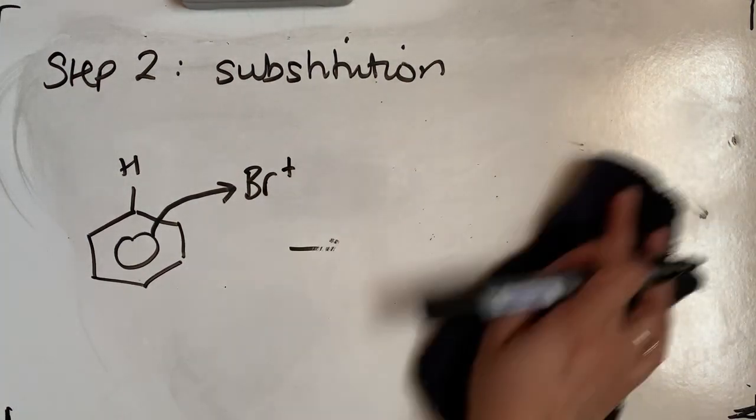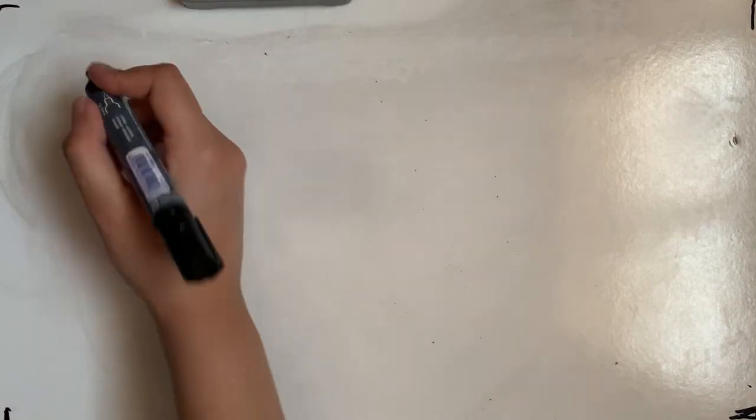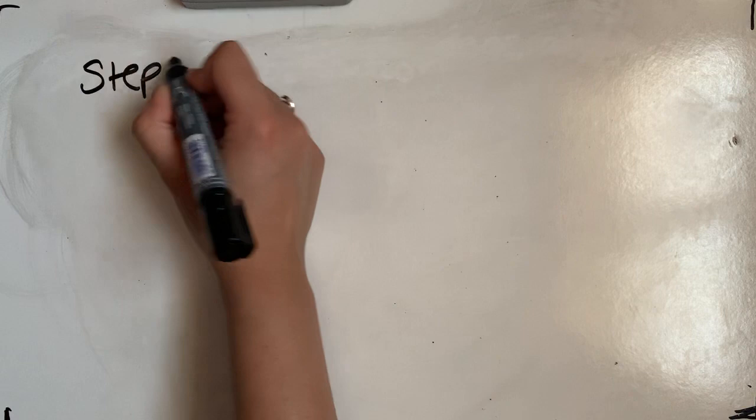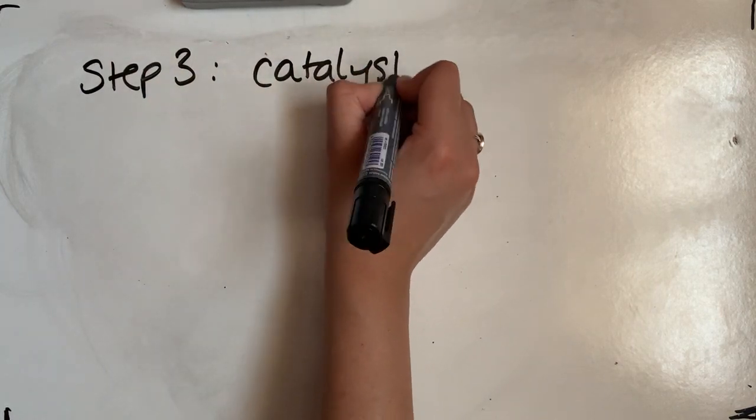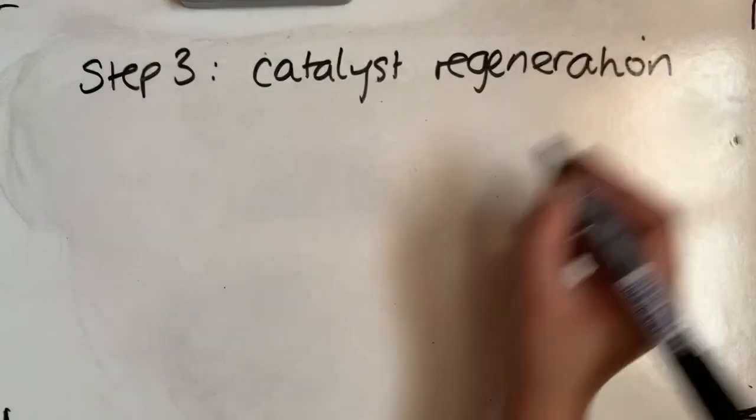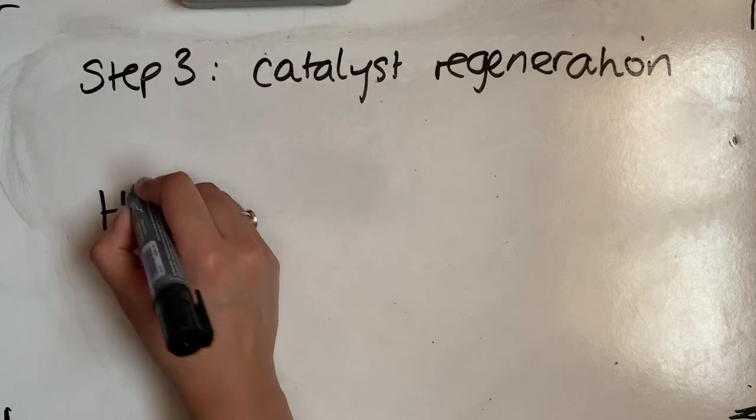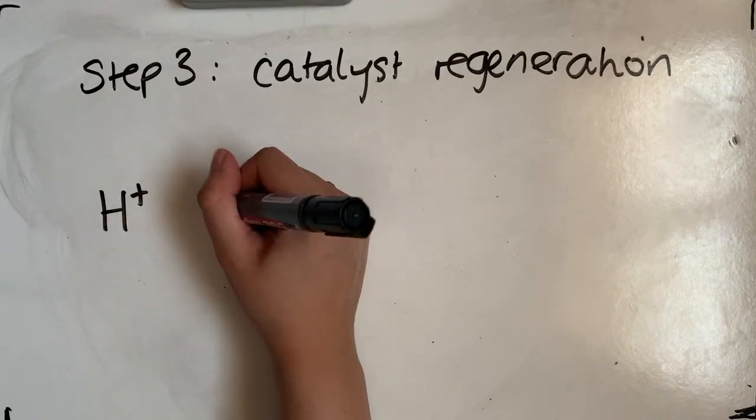Now let's go and see what happens in step three, because we've still got H-plus there. We need to regenerate our catalyst in step three. So step three is catalyst regeneration. So we had our H-plus being formed in step two.